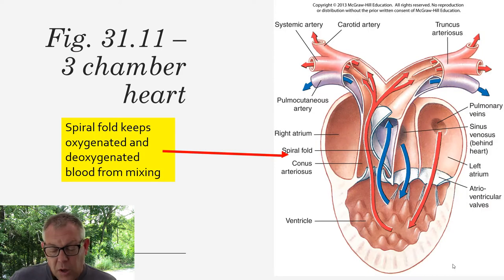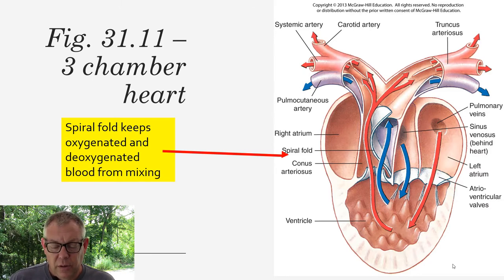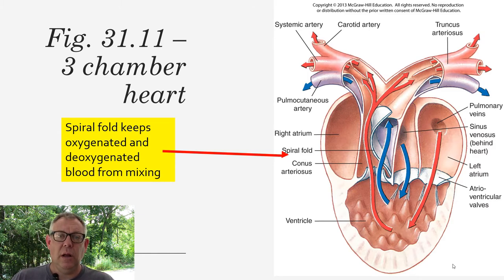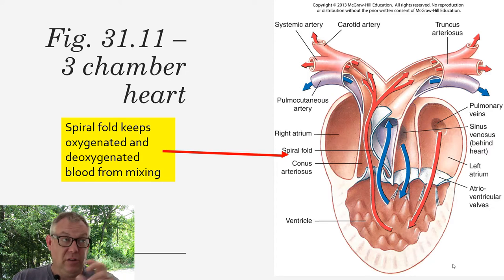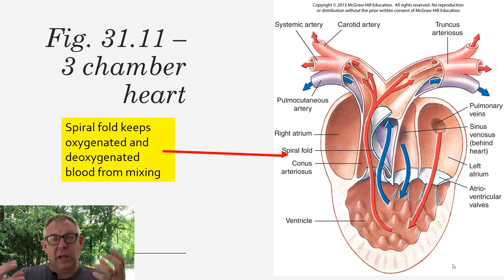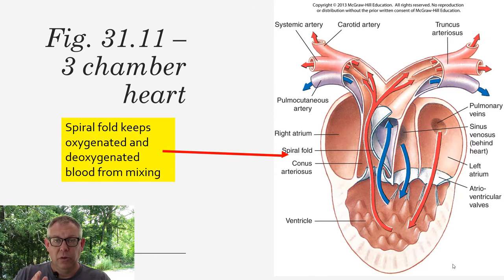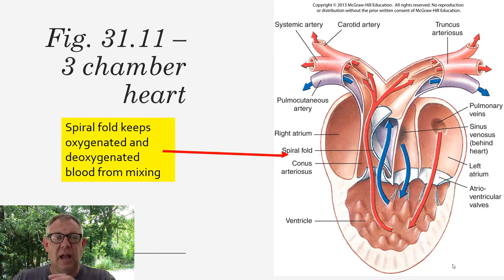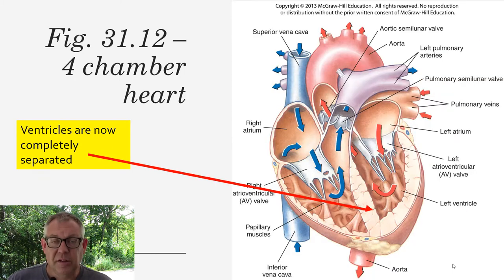A three-chambered heart is very similar to our four-chambered heart, but with only one ventricle. That single ventricle pumps blood both to the lungs and to the body simultaneously. The blood going to the lungs is deoxygenated, and the blood going to the body is oxygenated — you don't want those to mix. A spiral fold moves as the heart pumps and helps keep deoxygenated and oxygenated blood from mixing. It works, but it's not as efficient as a four-chambered heart.